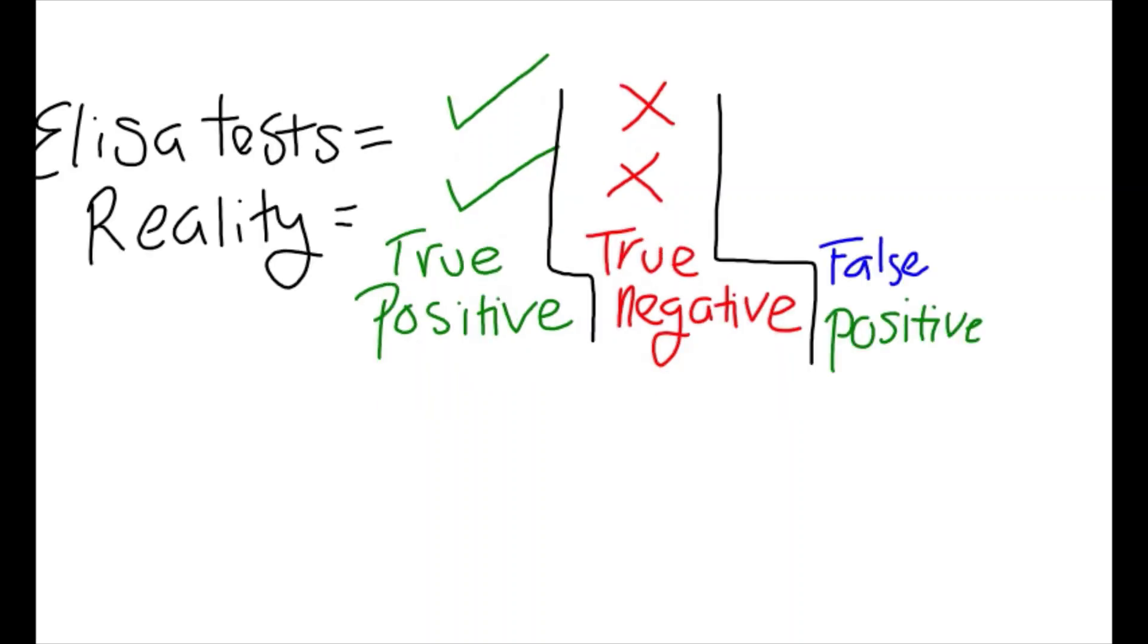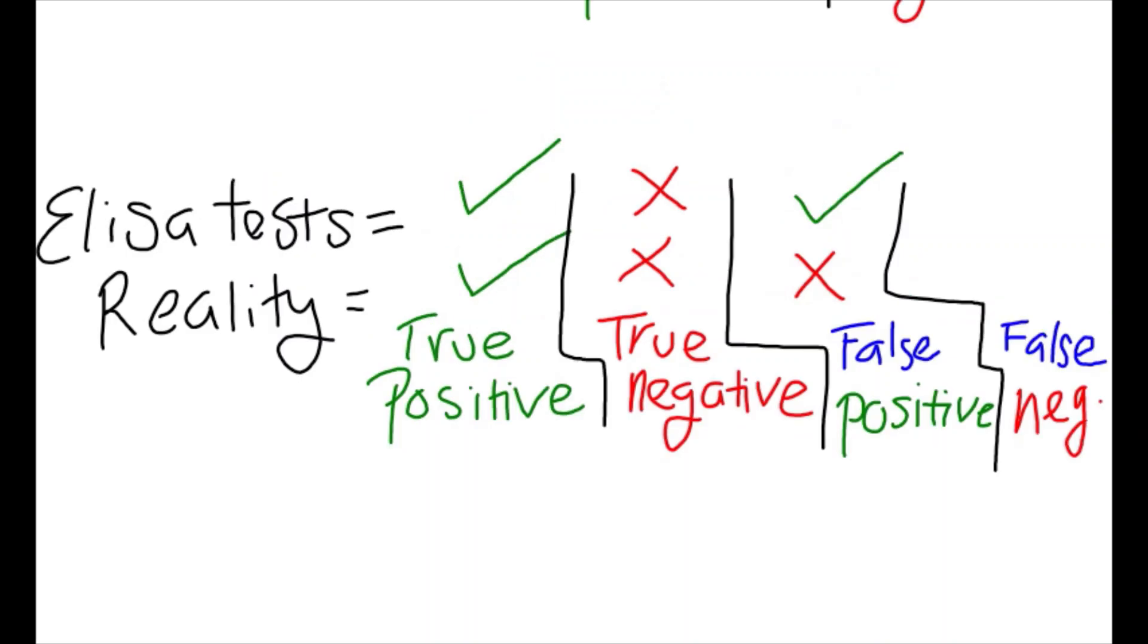A false positive test will tell us if the person does have HIV, but after getting a second opinion, it is revealed that they do not. A false negative test will tell us if the person does not have HIV, but then a second opinion tells us that they do.